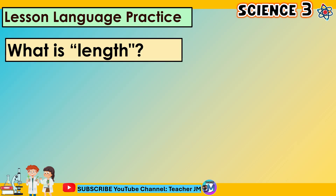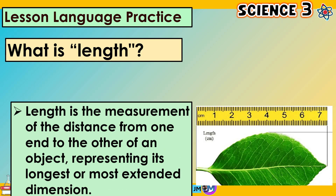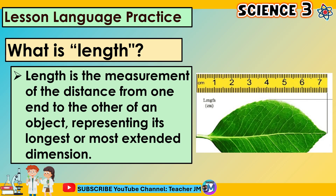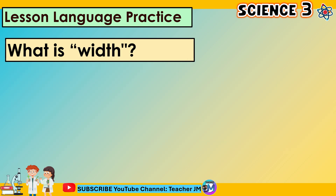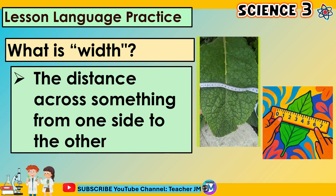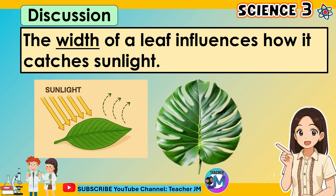What is length? Length is the measurement of the distance from one end to the other of an object, representing its longest or most extended dimension. What is width? Width is the distance across something from one side to the other. The width of the leaf influences how it catches sunlight.